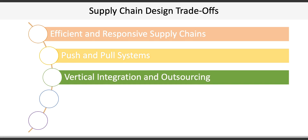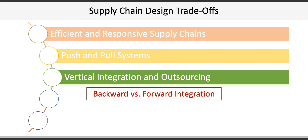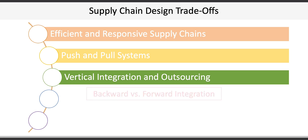The third trade-off involves vertical integration versus outsourcing. Vertical integration refers to the process of acquiring and consolidating elements of a value chain to achieve more control. Integration can either be backward or forward. Backward integration refers to acquiring capabilities towards suppliers, whereas forward integration refers to acquiring capabilities towards distribution or even customers. Starbucks' acquisition of La Boulange is an example of backward integration, whereas Apple building and operating its own retail stores is an example of forward integration.